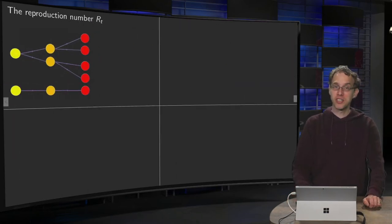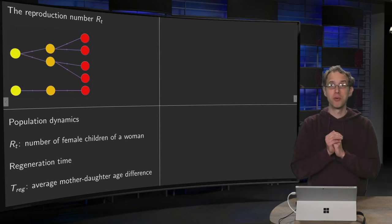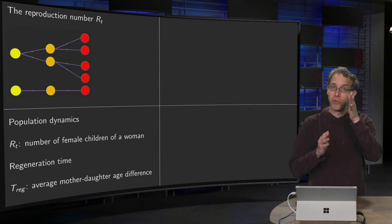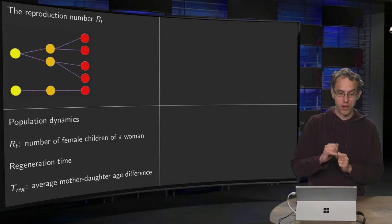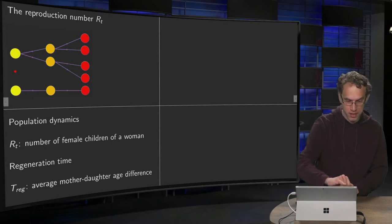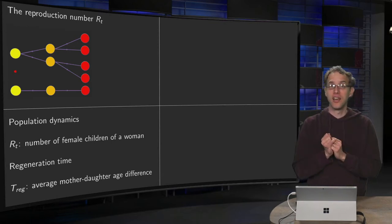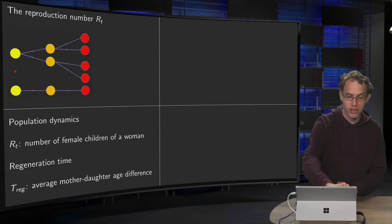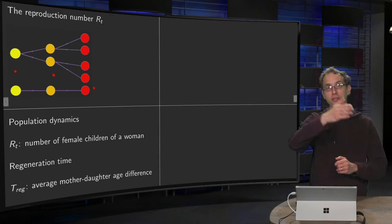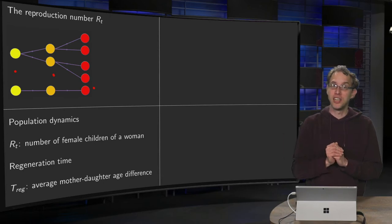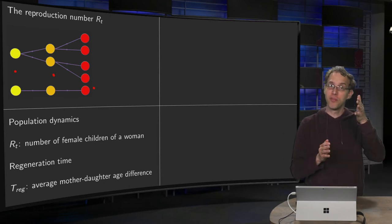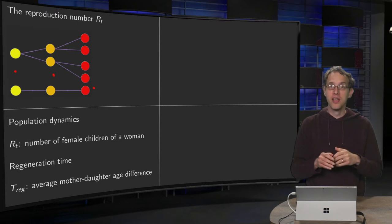So what is the idea? The reproduction number is actually coming from population dynamics. We start with the mother over here, and then she has, for example, two daughters, and both of her daughters have also two daughters. Then after two generations, we have four women, and we started with one.